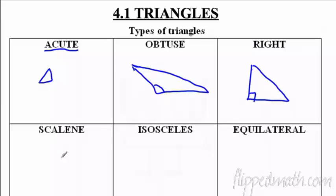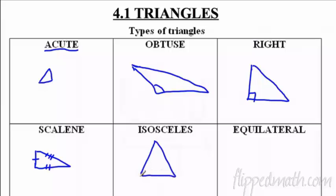Now how about by sides? Scalene means none of the sides are the same — if I do something like this, this side does not match this side which does not match this side. That is a scalene triangle — no sides are the same. Then there's isosceles, which means two sides are the same. And equilateral means all sides are the same — everyone matches.